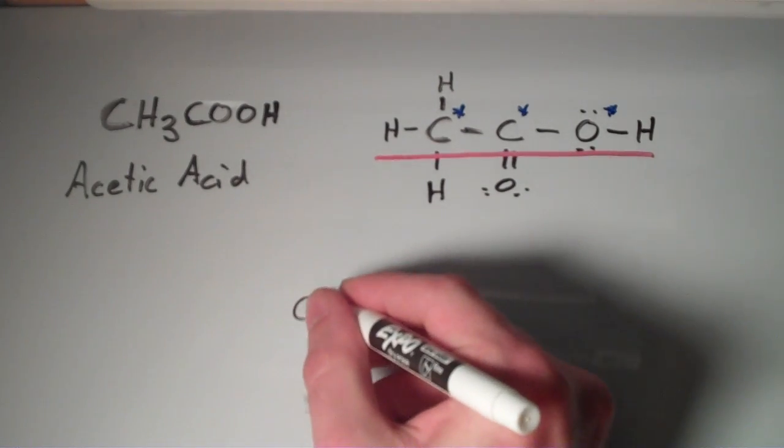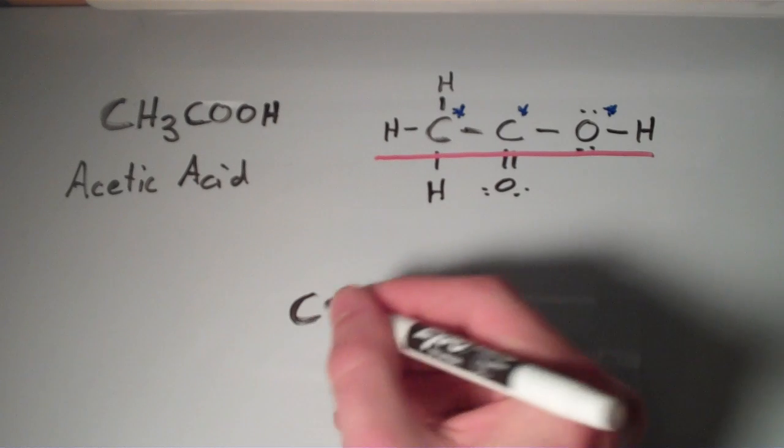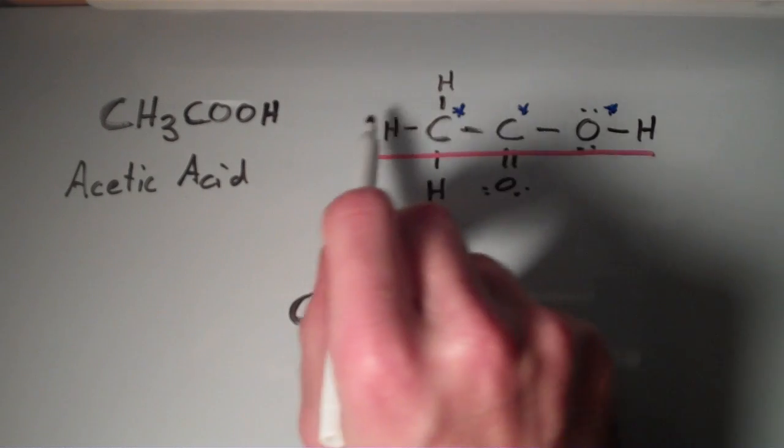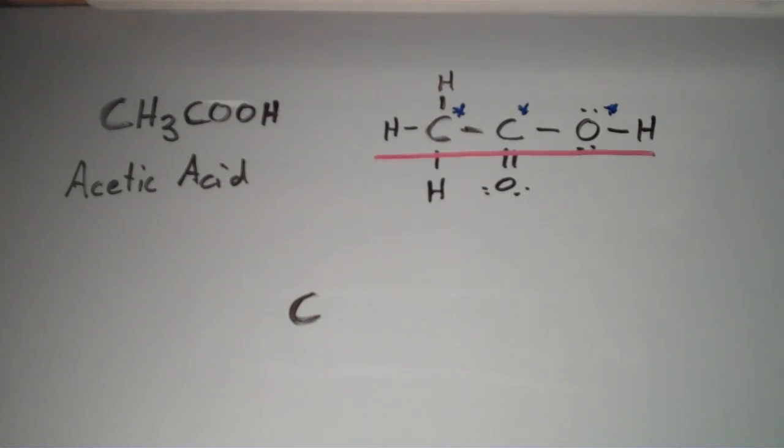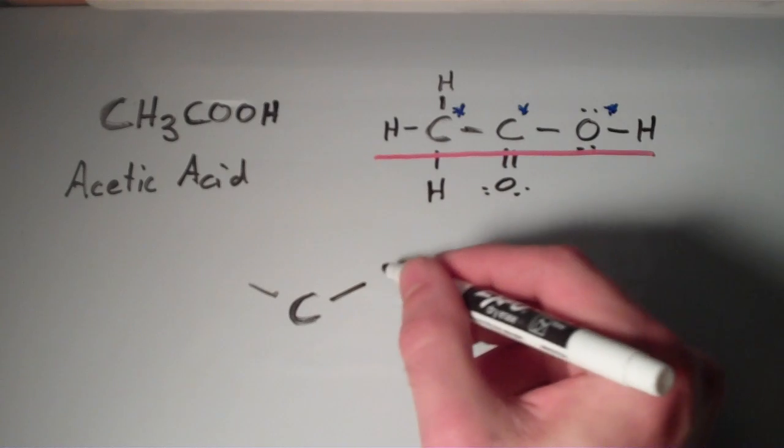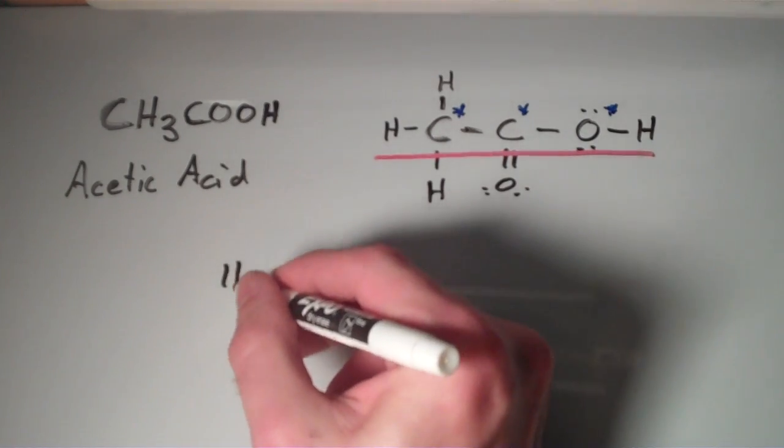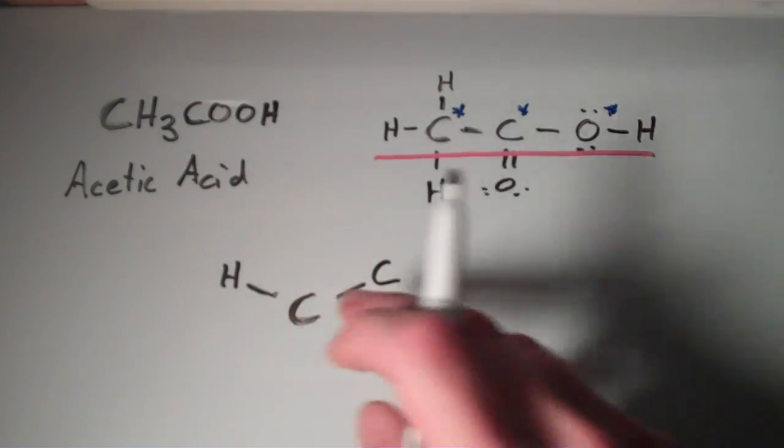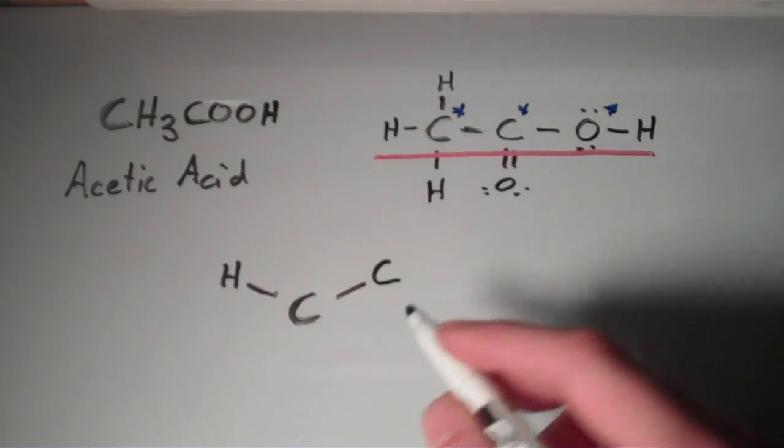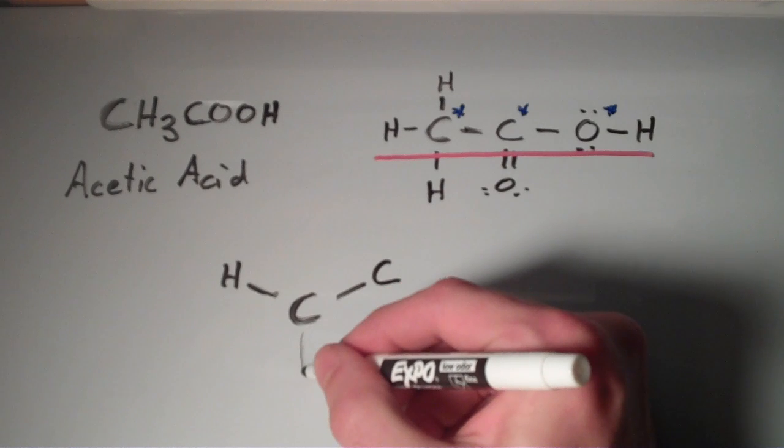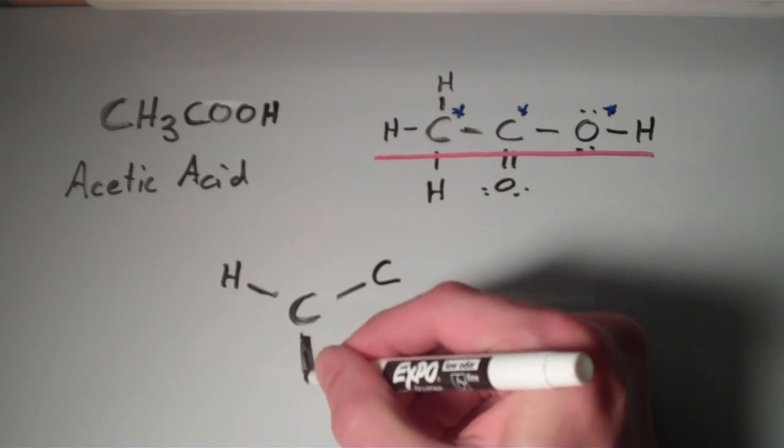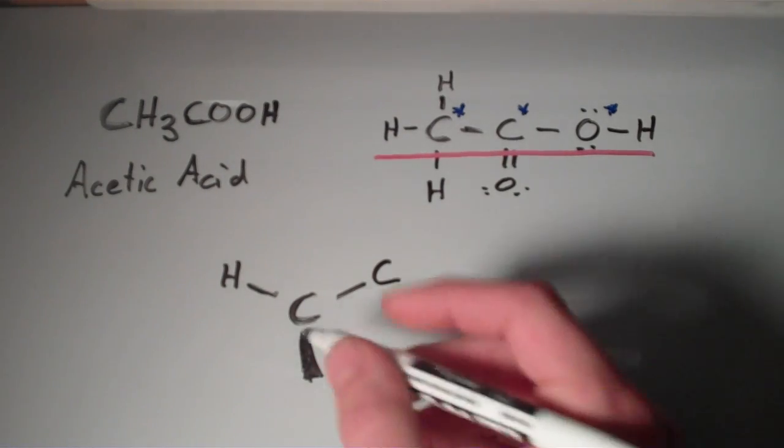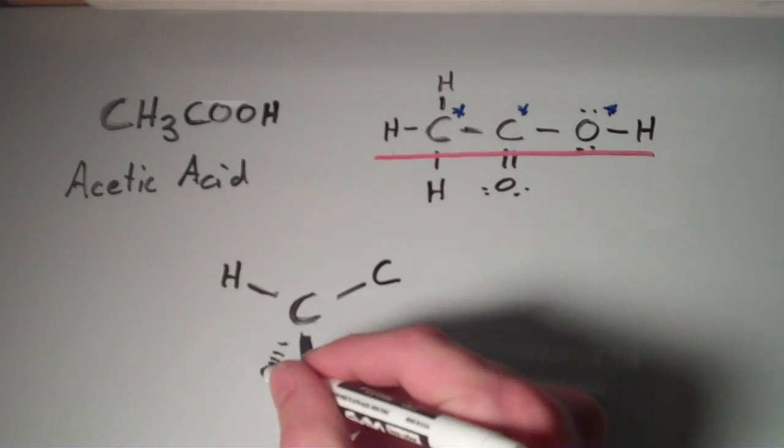So let's draw that tetrahedral shape. I have my carbon in the center. And then I'm going to keep the hydrogen and the carbon in the plane of the board. So I'm going to put those here and here. The other two hydrogens, well this thing is a tetrahedron so one of the hydrogens is going to have to come out in front of the board.